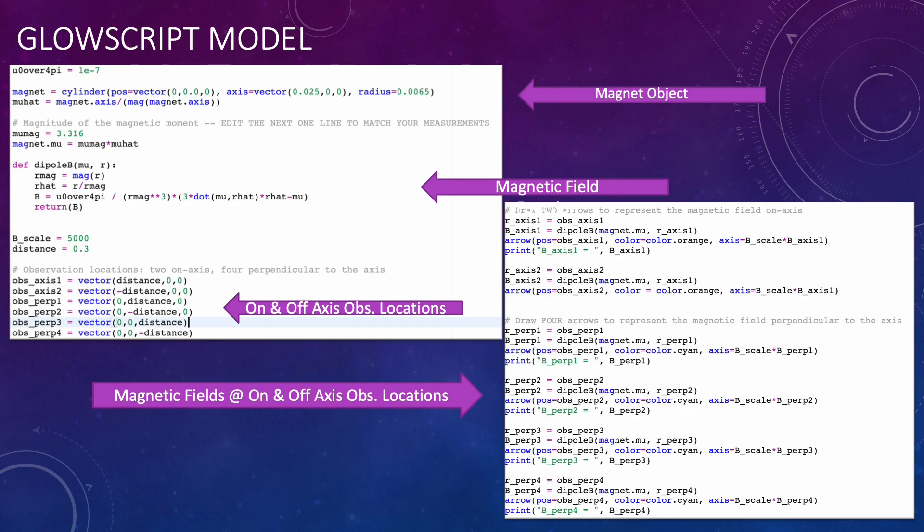For my computational model I listed physical constants, created a magnet object, and inserted my calculated magnetic dipole moment of 3.136. I then created a magnetic field function and defined two observation locations for on axis and four observation locations for off axis.